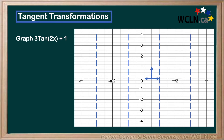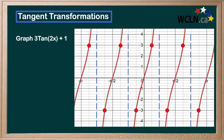Now that we know where 1 is, we need to multiply this point by 3 because we have a vertical transformation of 3. So we move this point up, and there we have it — done with the transformations. Let's fill in the other points on the graph before we apply the final vertical shift. The negative point will be the same, just mirrored about both axes.